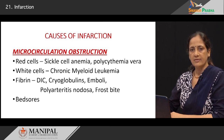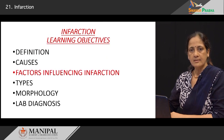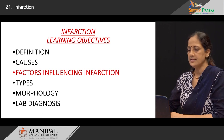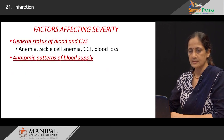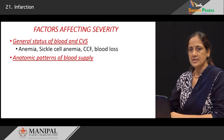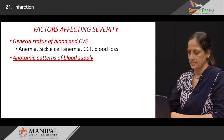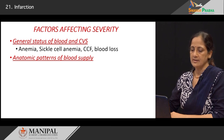The factors which influence infarction in the tissue include the general circulation and the status of the cardiovascular system. If an individual is anemic, then the slightest cause for hypoxia will cause infarction of the tissue. If a patient has sickle cell anemia, the sickle RBCs block the microcirculation, and therefore any other cause for hypoxia will easily predispose to infarction. Similarly, in congestive cardiac failure and when there is blood loss.